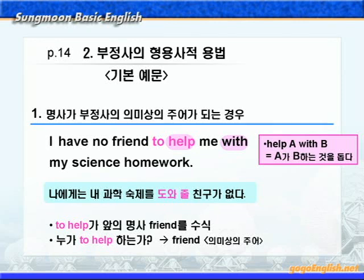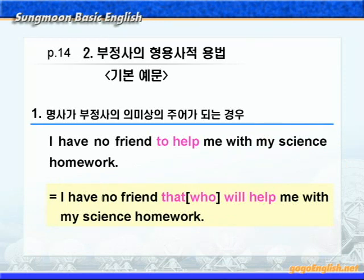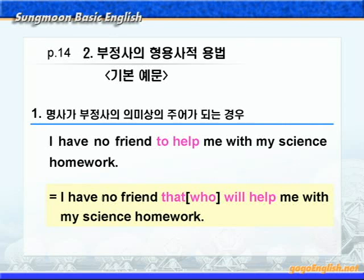이 문장을 관계대명사를 사용해서 문장 전환을 해보겠습니다. to help의 의미상의 주어가 확실히 더 드러나게 될 것입니다. help me 하는 주체가 friend인 것은 다 알고 있을 겁니다. 참고로 관계대명사를 쓸 때 선행사가 사람이기 때문에 who를 써도 좋지만 friend 앞에 'no'라는 말이 있으면 that을 쓰는 것이 더 좋습니다. 자세한 내용은 10장 관계대명사 설명 때 다루겠습니다.